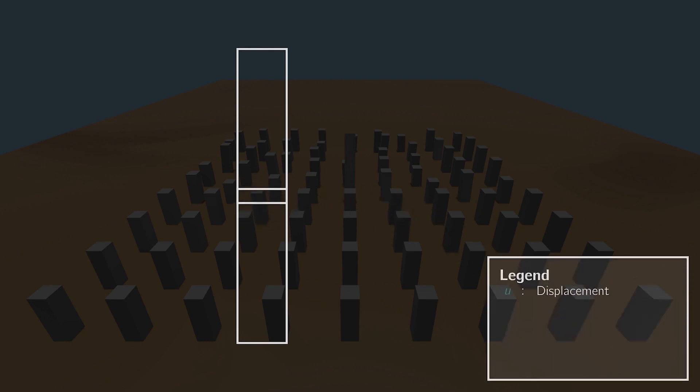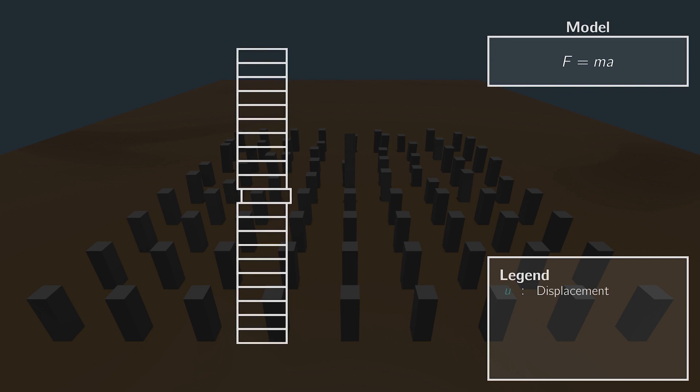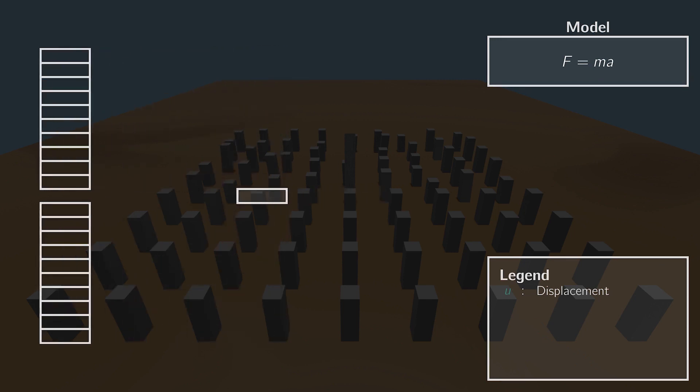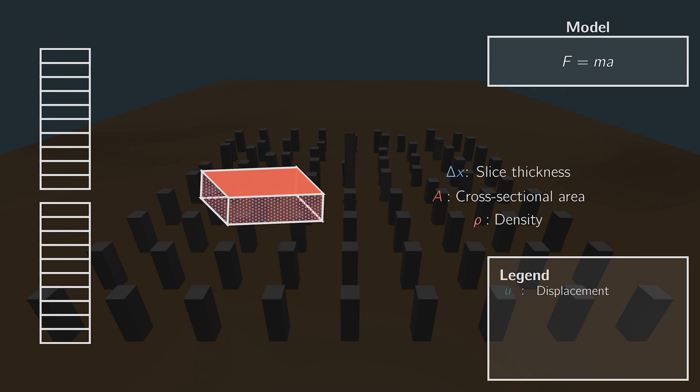As a starting point for our model, we will make use of Newton's second law. All acting forces applied on the slice of the pile should be equal to the mass of the slice times its acceleration. To derive the wave equation, we will look at a thin slice of the pile. We will mark the top coordinate of the slice with X, and the bottom coordinate with X plus delta X. The cross-sectional area is denoted with A, and the density of the material with rho. With these properties, we can calculate the mass of a slice, and substitute this in our model.